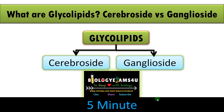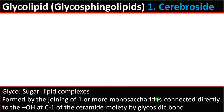Hi friends, welcome to biology exams4u.com. Today's topic of our discussion is what are glycolipids and how cerebroside is different from ganglioside within five minutes. Glycolipids are sugar-lipid complexes. They are called glycosphingolipids as the backbone is made up of sphingosine.